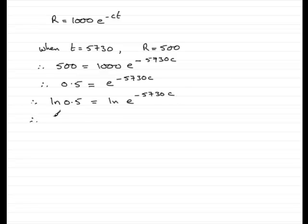by the power rule of logs, I can bring this value out to the front. So I can think of this as minus 5,730 C multiplied by the natural log of E. Now, the natural log of E is 1, so that means that I've got the natural log of 0.5 equals minus 5,730 C.